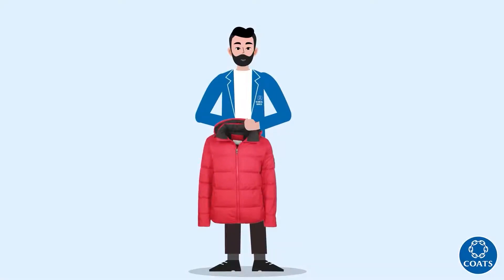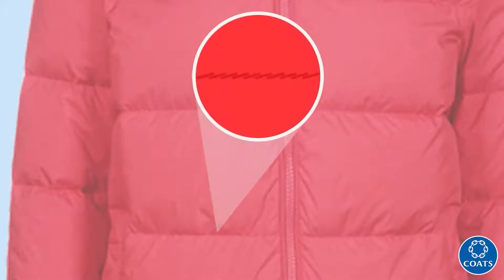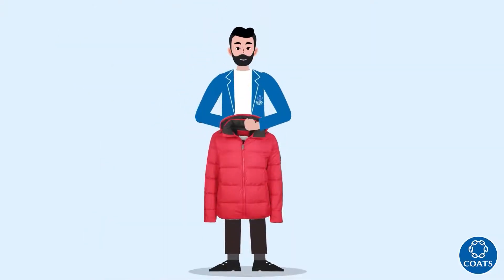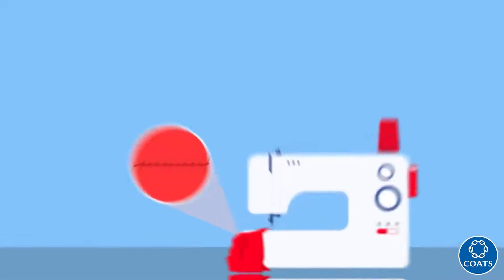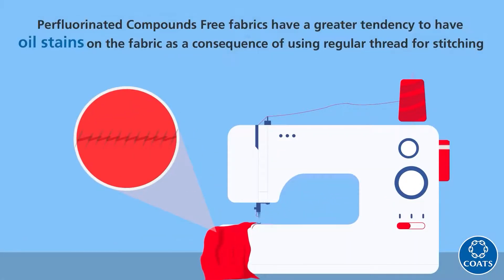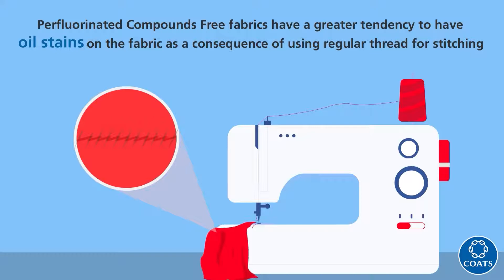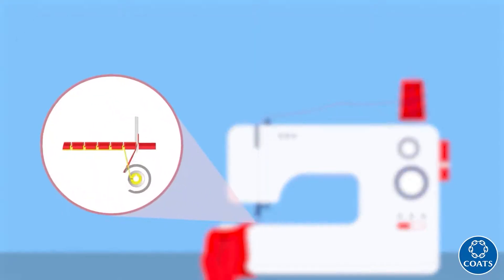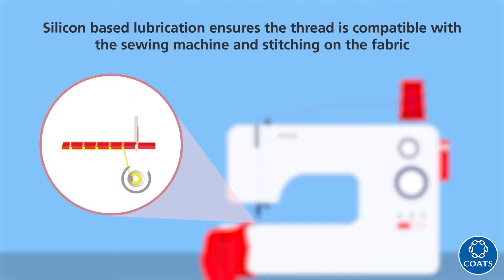Don't small marks make a big difference? Like these. You must be wondering how these stains got here. Oil-sensitive materials such as C0PFC-free fabrics have a greater tendency to have oil stains on the fabric as a consequence of using regular thread for stitching. This is due to the silicon-based lubrication that ensures the thread is compatible with the sewing machine and stitching on the fabric.